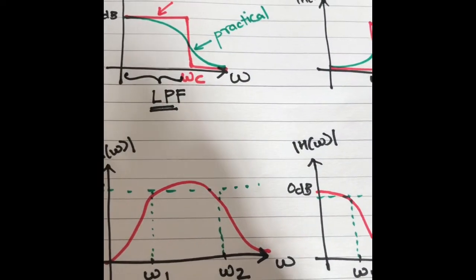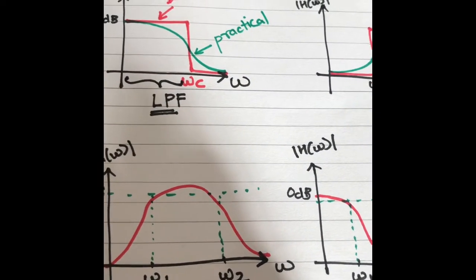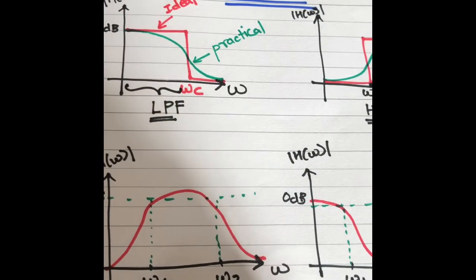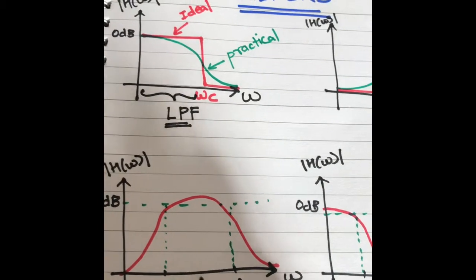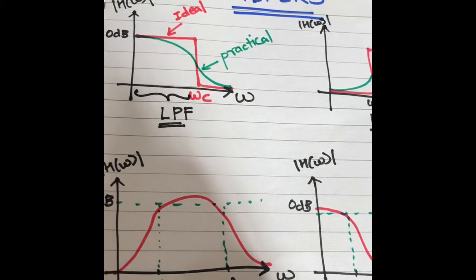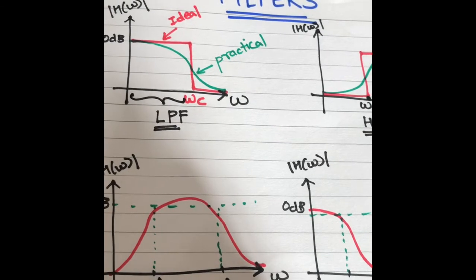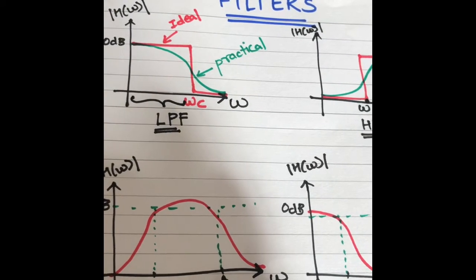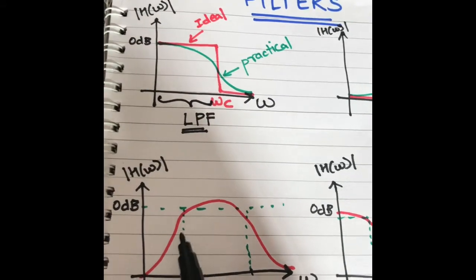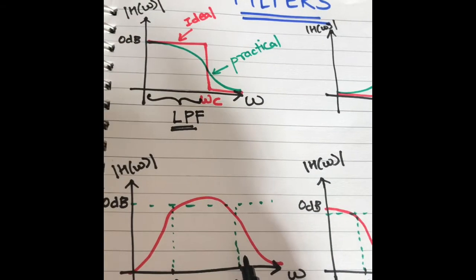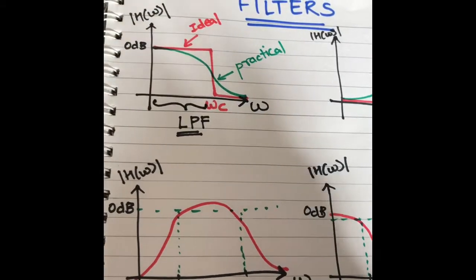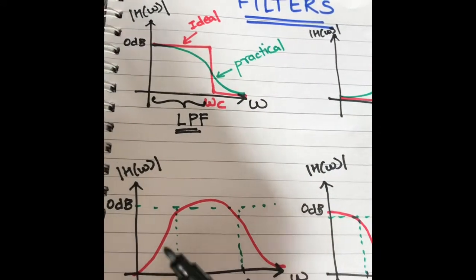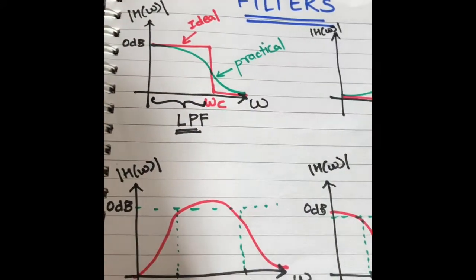Next is the band pass filter. A band pass filter has two cutoff frequencies, omega 1 and omega 2. All frequencies between omega 1 and omega 2 are passed, and all frequencies outside that range are highly attenuated.